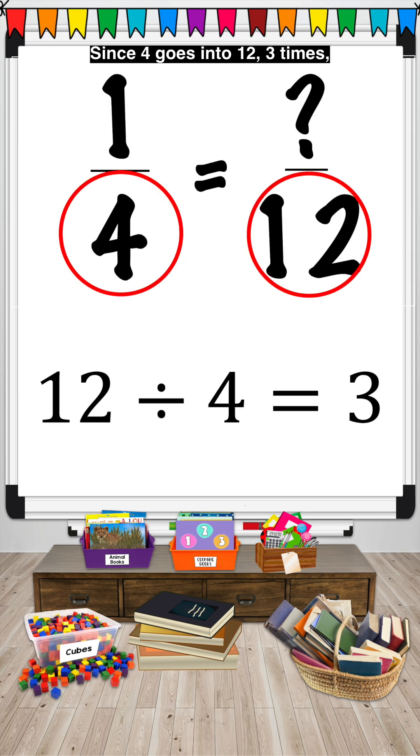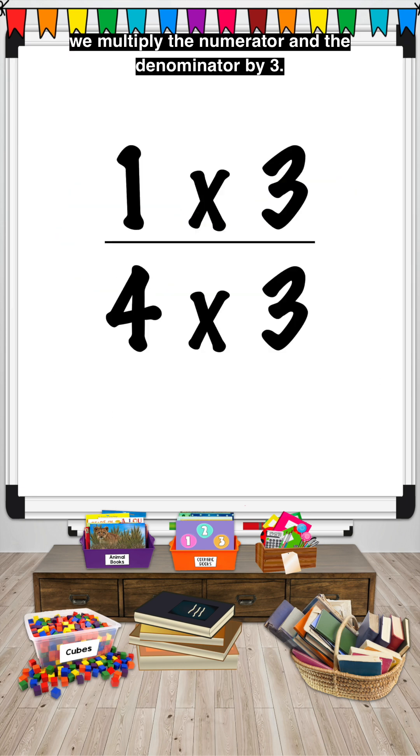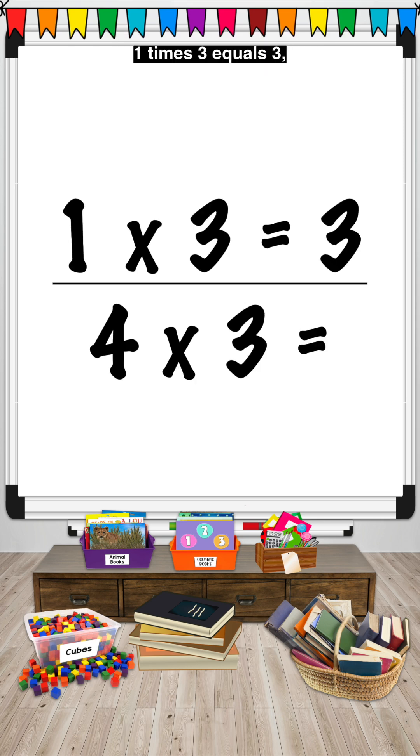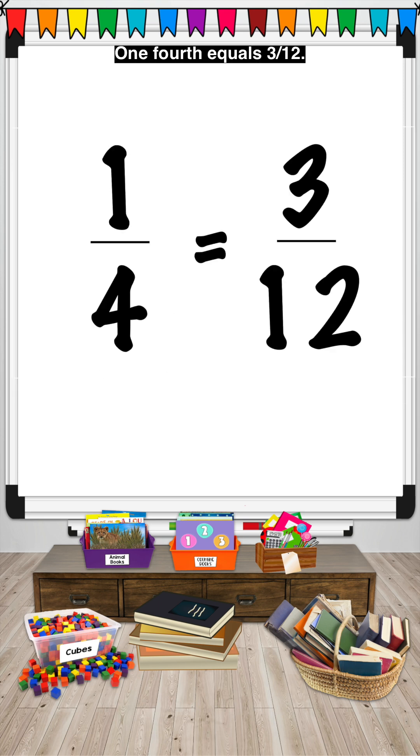Since four goes into twelve three times, we multiply the numerator and the denominator by three. One times three equals three. Four times three equals twelve. One-fourth equals three-twelfths.